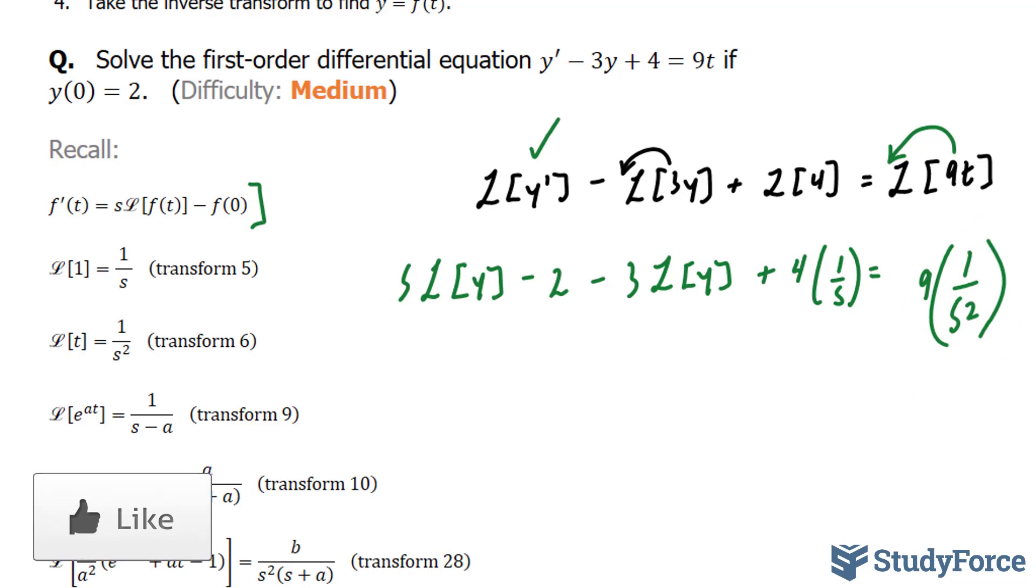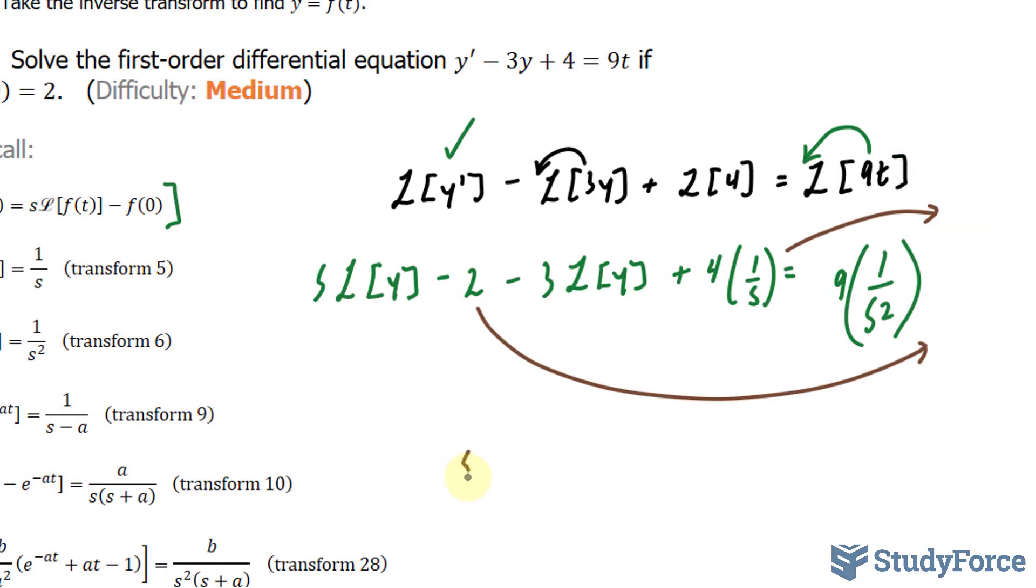Now let's clean this up. I'm going to take this term over, and I'm going to take this 2 over. This gives me s times the transform of y, that minus 2 no longer is there.